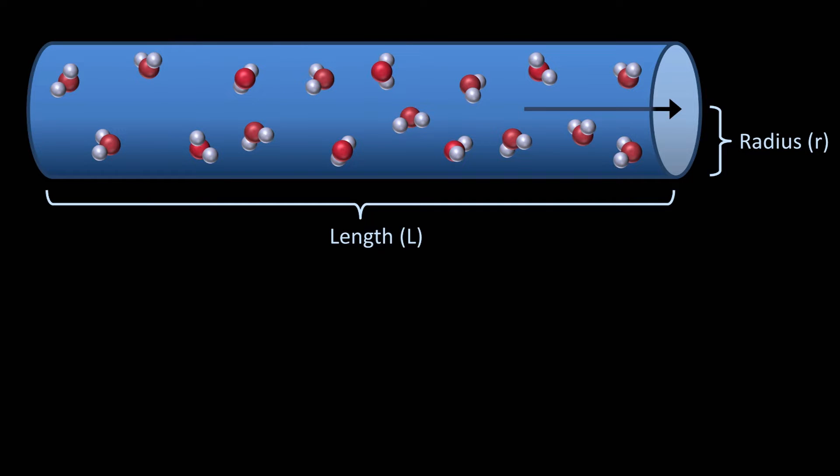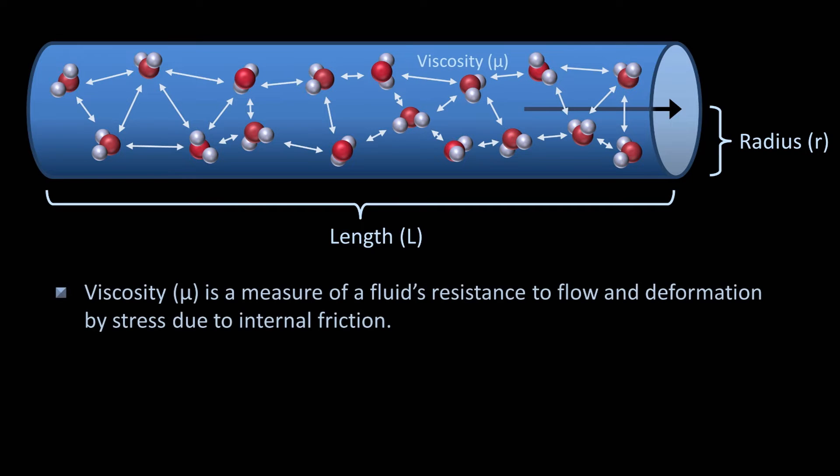Instead, various intermolecular forces between neighboring molecules are causing some pushing and some pulling this way and that, resulting in an internal friction within the fluid. Viscosity, which is usually denoted by lowercase mu, is a measure of a fluid's resistance to flow and deformation by stress due to this internal friction.